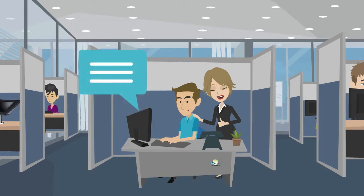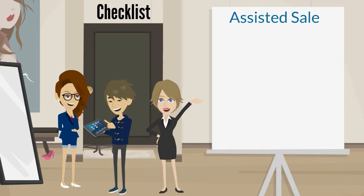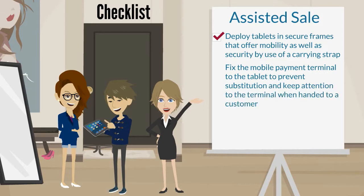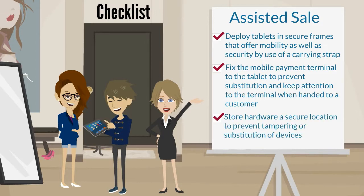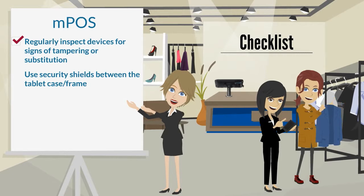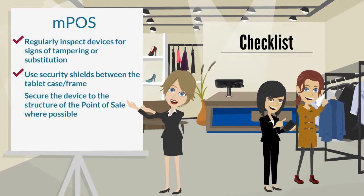She has made a list which she will share with you here. The solution to the challenges, as far as Paula is concerned, is to: deploy the tablets in secure frames that offer mobility as well as security by use of a carrying strap; fix the mobile payment terminal to the tablet to prevent substitution; keep a close eye on the terminal when it is handed to a customer; store hardware in a secure location to prevent tampering or substitution; regularly inspect devices for signs of tampering or substitution; use security shields between the tablet and the case and the frame; secure the device to the structure of the point of sale where possible; and use locks or other securing mechanisms.